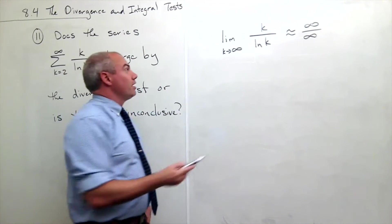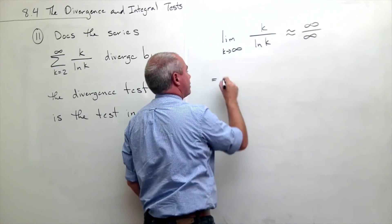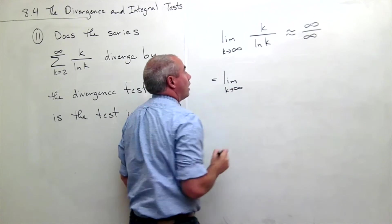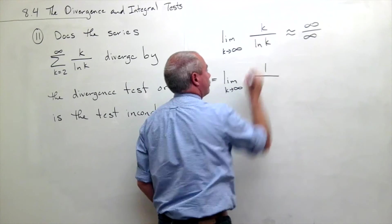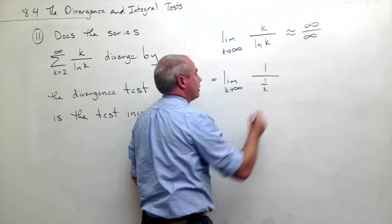I need to use l'Hopital's rule, so I'll take the derivative of the top and bottom. I get the limit as k goes to infinity of: the derivative of k is 1, and the derivative of ln k is 1 over k. In other words, I